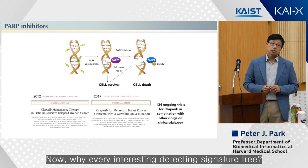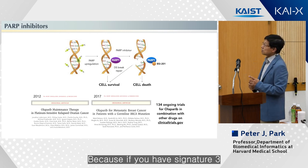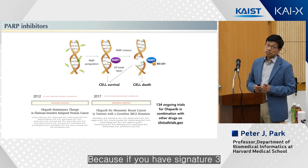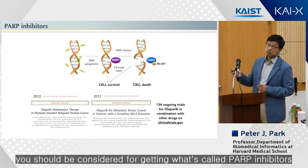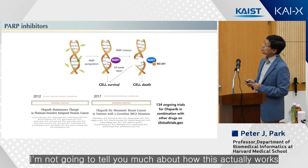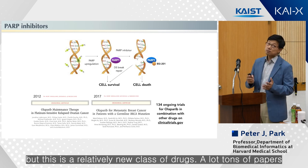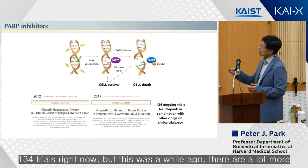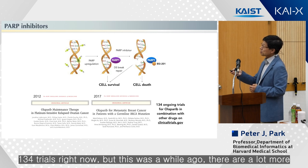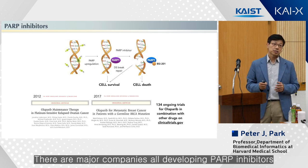Why are we interested in detecting Signature 3? Because if you have Signature 3 you should be considered for getting PARP inhibitors — a relatively new class of drugs. There are currently 134 clinical trials involving PARP inhibitors, and there are major companies all developing them.